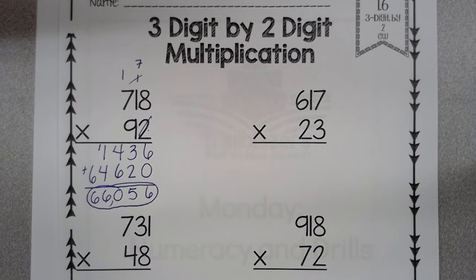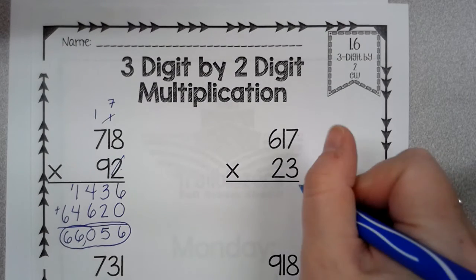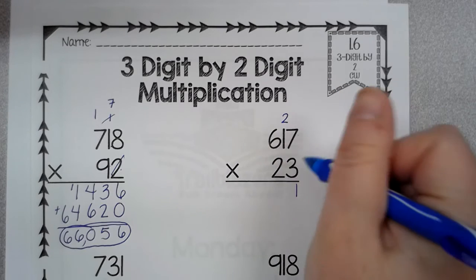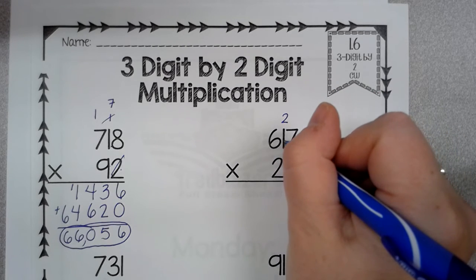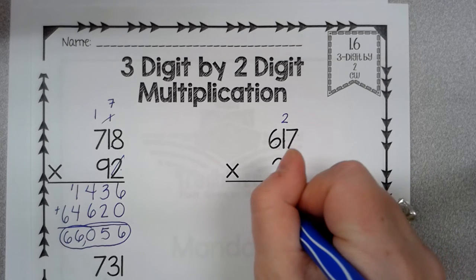Okay, just do your multiplication facts and you should be fine. I'll do one more. Okay, three times seven is twenty-one. Three times one is three plus two is five. I'm lining everything up. Three times six is eighteen.